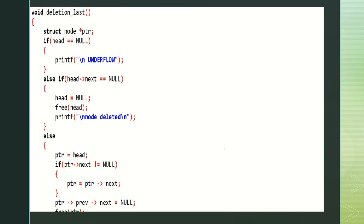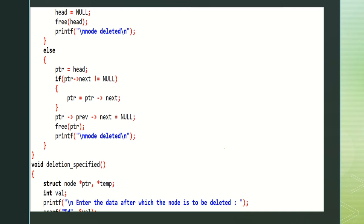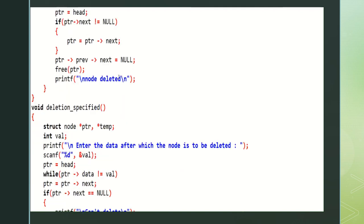Void deletion last — the last node is deleted here. Struct node pointer. If head is equal to null, underflow — we can't delete. Else if head next is equal to null, head is set to null and free of head — the list contains only one element, and it prints node deleted. Otherwise, ptr is equal to head. While ptr next is not equal to null, ptr is equal to ptr next. Then ptr previous next is equal to null — as this is the last element, the next field should contain null. Free of ptr — element is deleted and it prints node deleted.